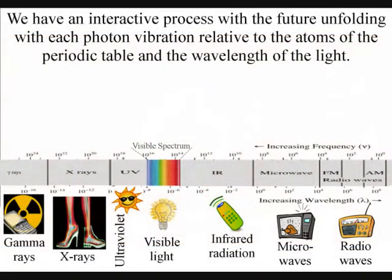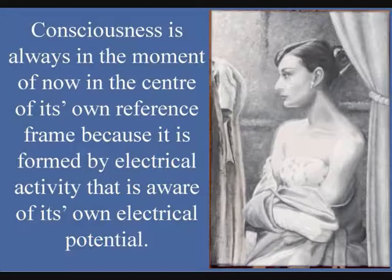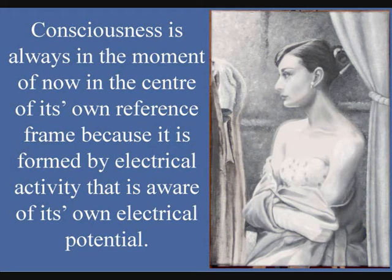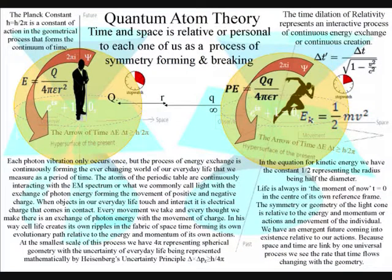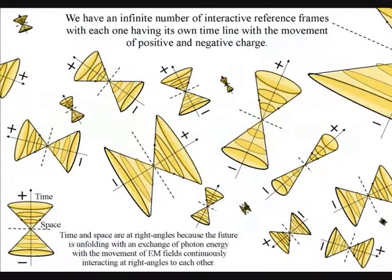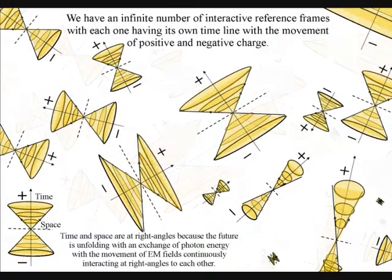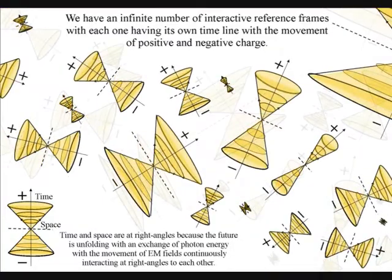Electrical activity in the brain is the most fundamental component of consciousness. This is because conscious awareness is formed by this electrical potential that is always in the moment of now, in the center of its own reference frame. We have an infinite number of dynamic interactive reference frames that make up our universe, continuously coming in and out of existence.